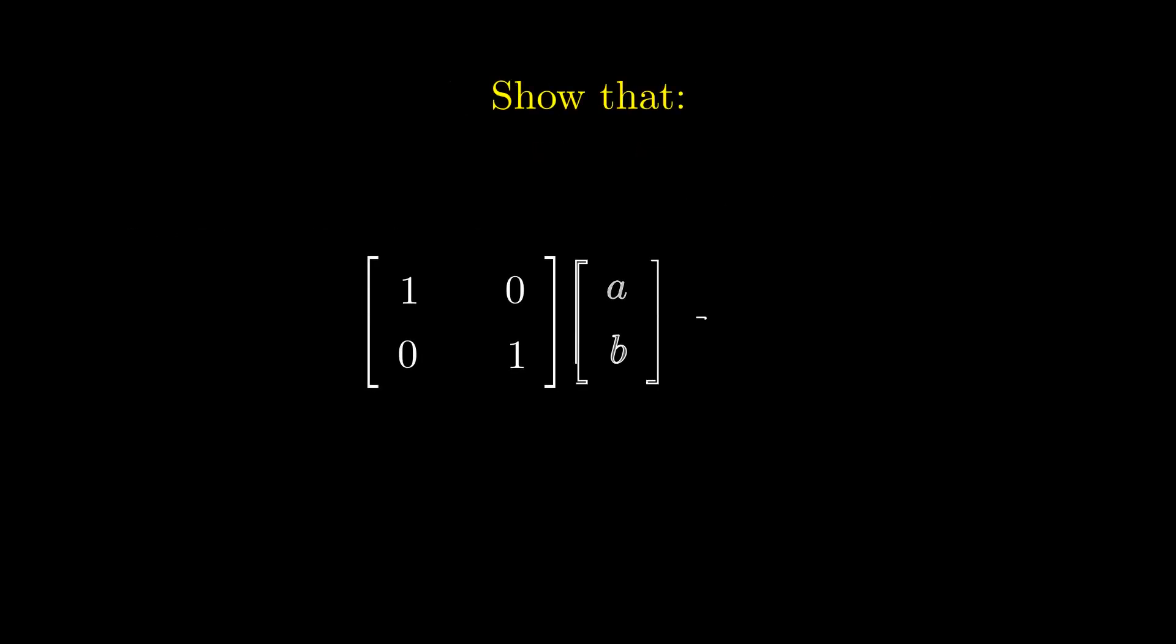Verify this is true by multiplying the two-dimensional identity matrix with this matrix and check to make sure you get back the original matrix.